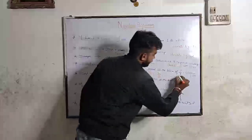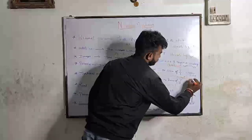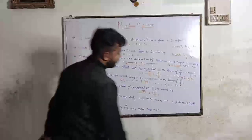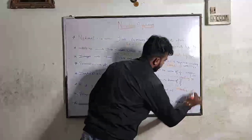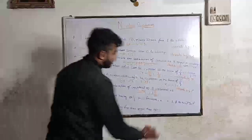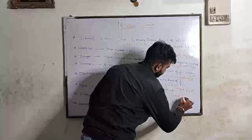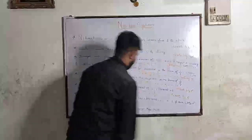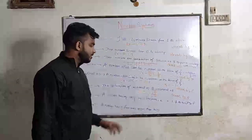Rational number denoted by Q. Irrational number denoted by P bar Q. Real number is denoted by capital R. Now clear.